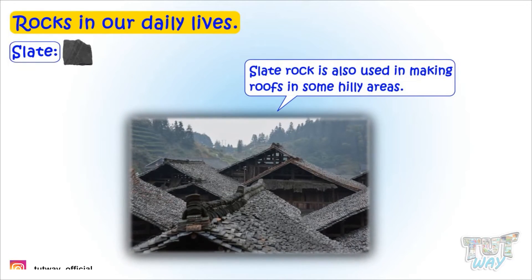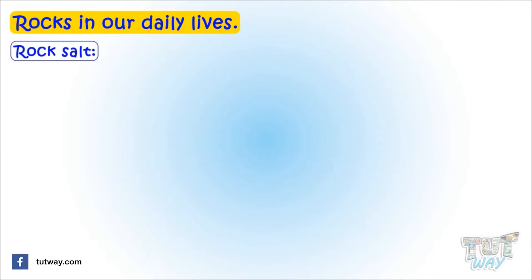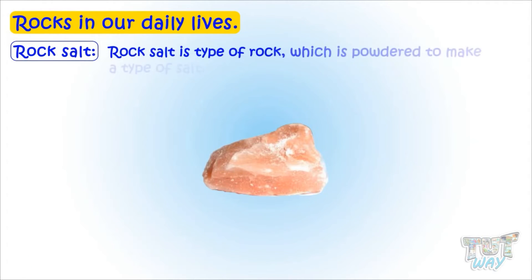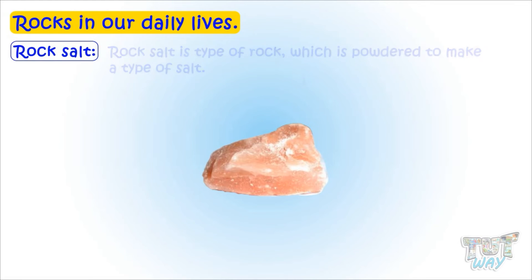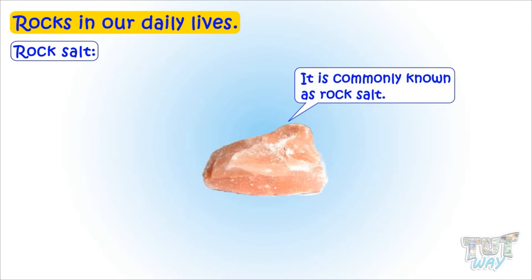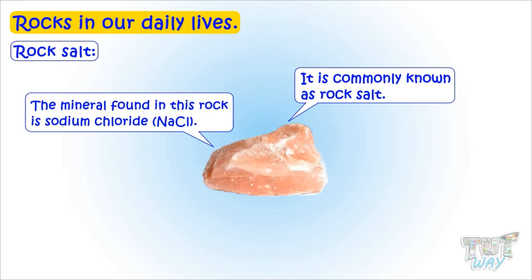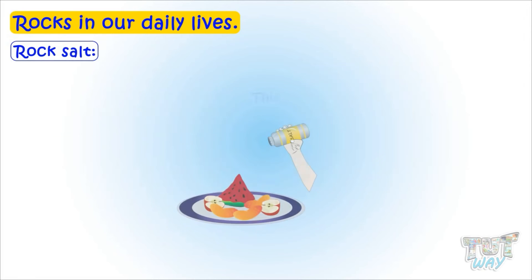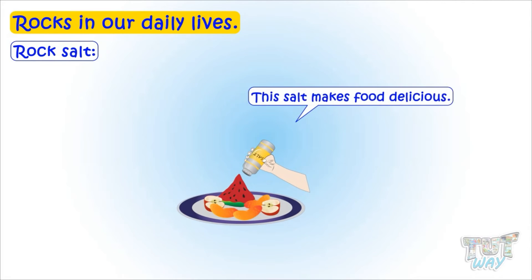The next type of rock is rock salt. Rock salt is a type of rock which is powdered to make a type of salt, commonly known as rock salt. The mineral found in this rock is sodium chloride, and this salt makes food delicious.